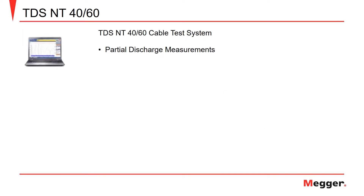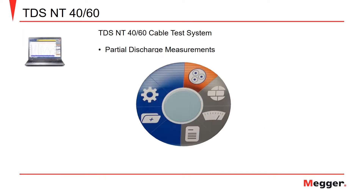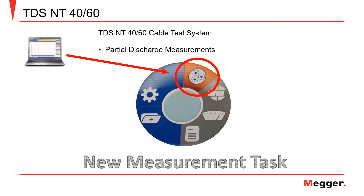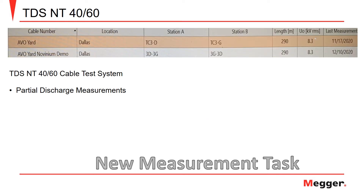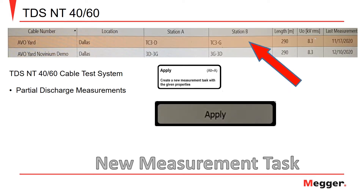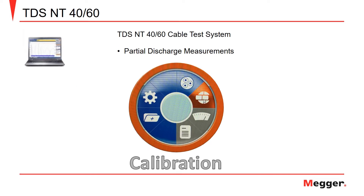To begin PD testing, select the New Measurement Task icon. Find and select the cable you want to test and select the Apply icon. The next step is to calibrate the system for PD measurements.